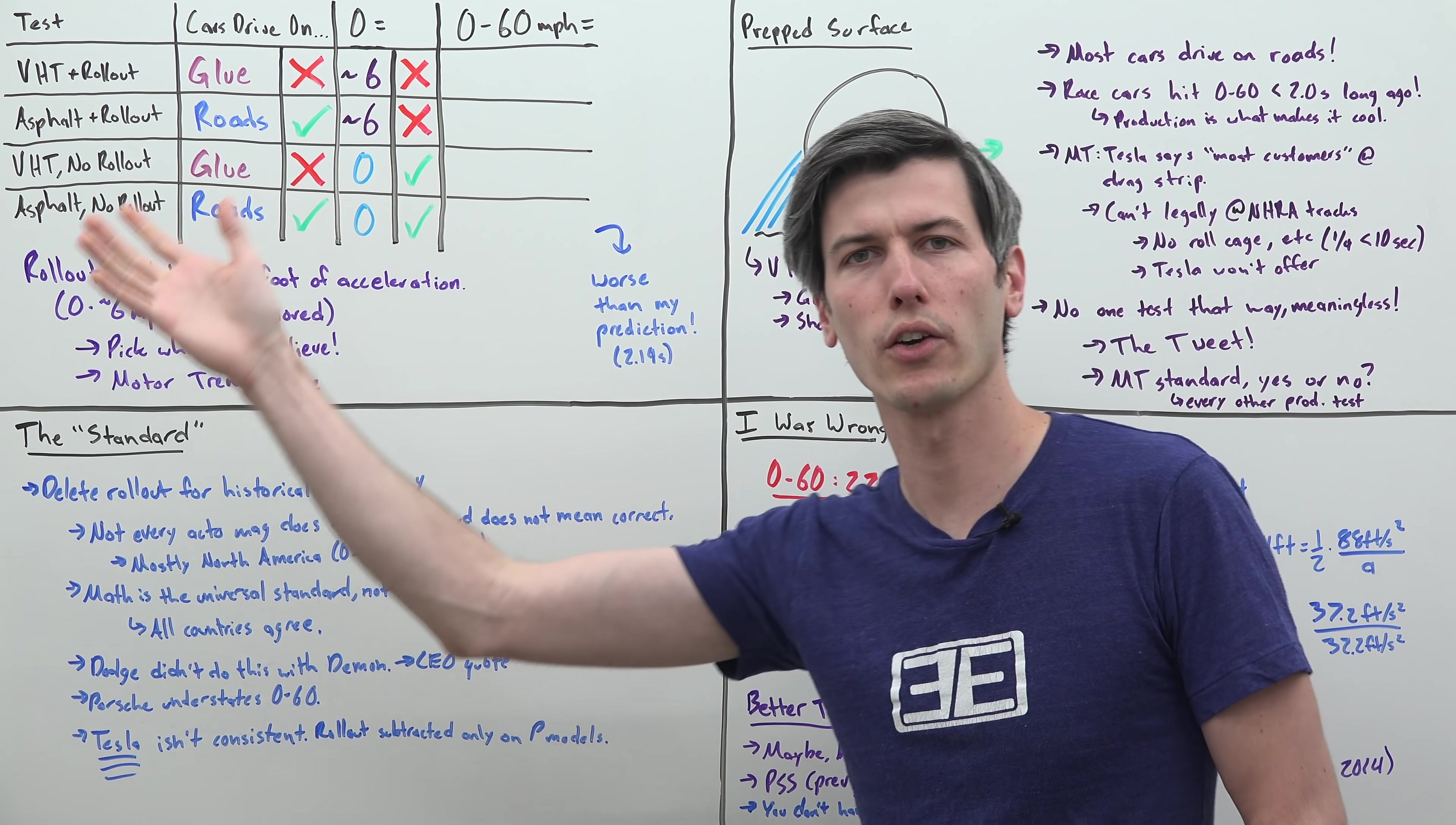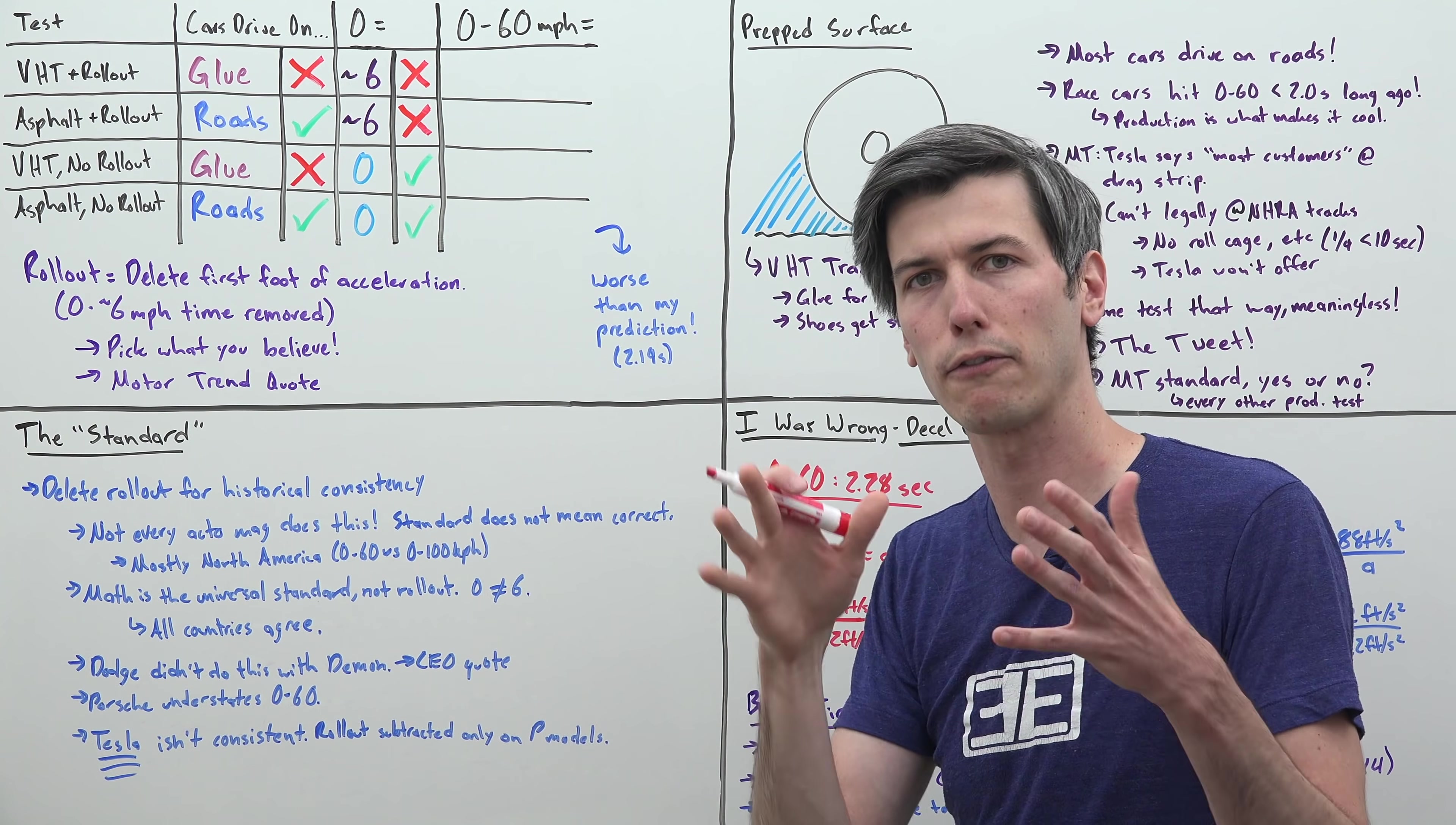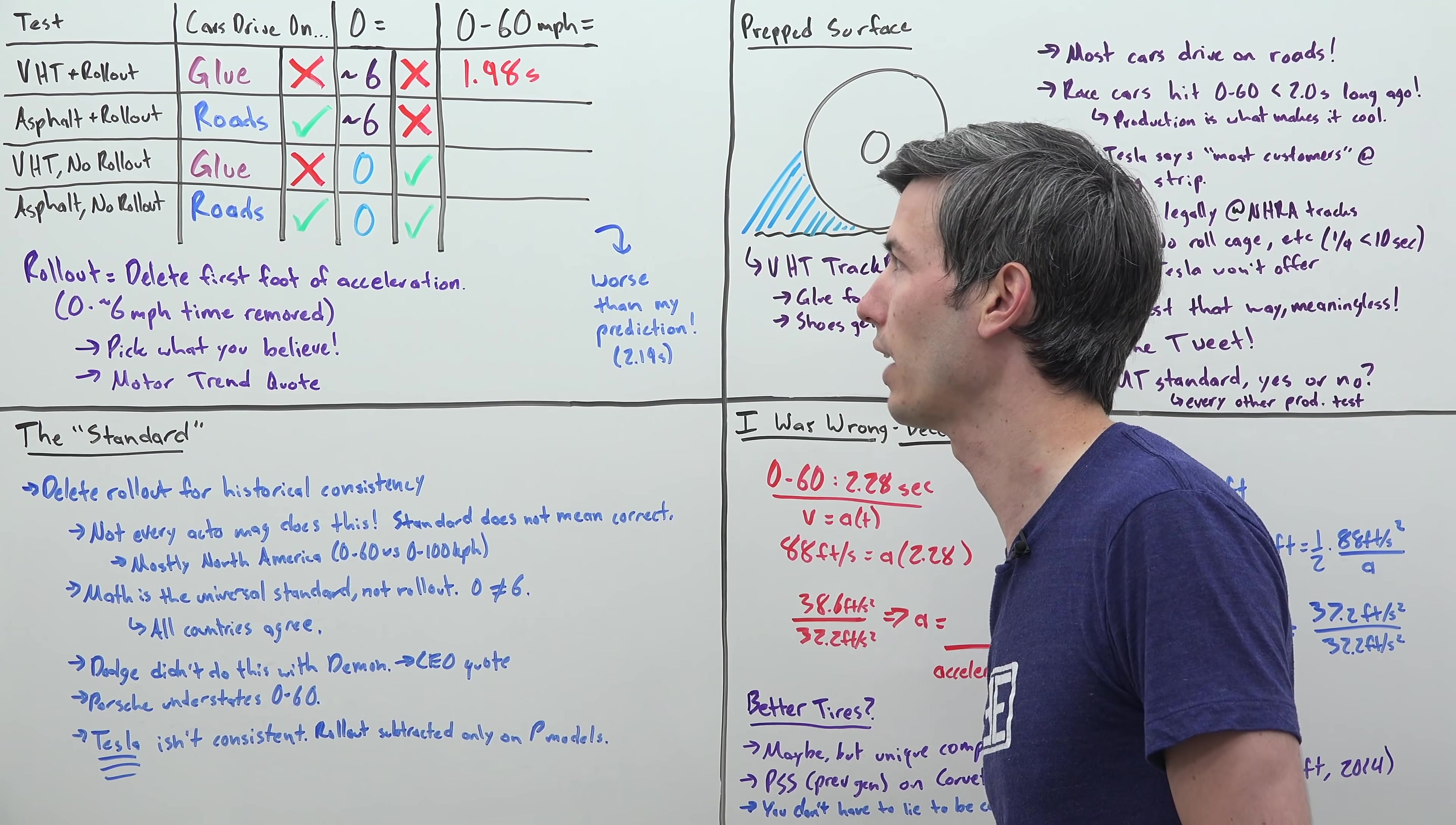I made this helpful chart so that we can make sense of Motor Trend's tested 0 to 60 times. If you take a Model S Plaid and drive it on a drag strip covered in VHT trackbite, which is basically glue for drag strip, and you delete that first foot of rollout, then your 0-60 time is 1.98 seconds. So if you believe that cars drive on glue and you believe that 0 is equal to 6, then the 0-60 time was actually 1.98 seconds.